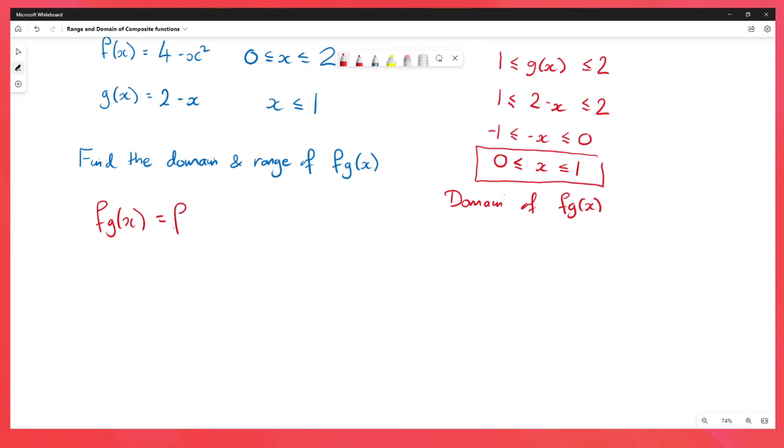So fg is putting the function g into f, which is going to give us 4 minus 2 minus x all squared. Now I'm not going to worry about multiplying this out because we don't need to. If we now think about what this function is doing on this domain.